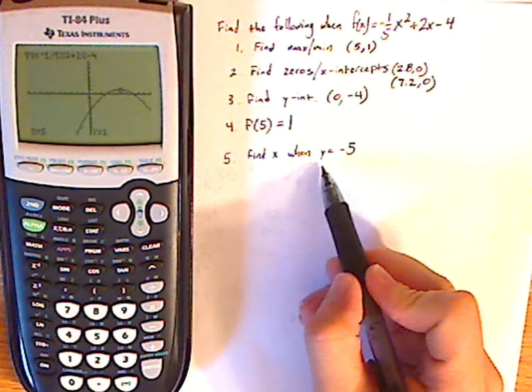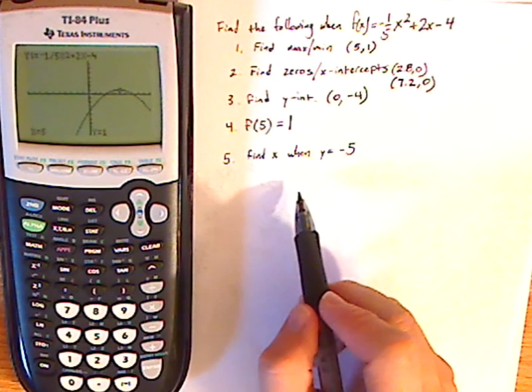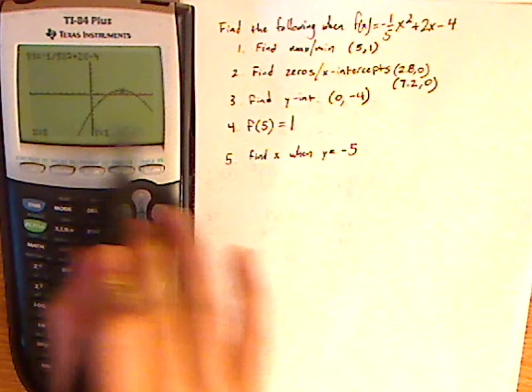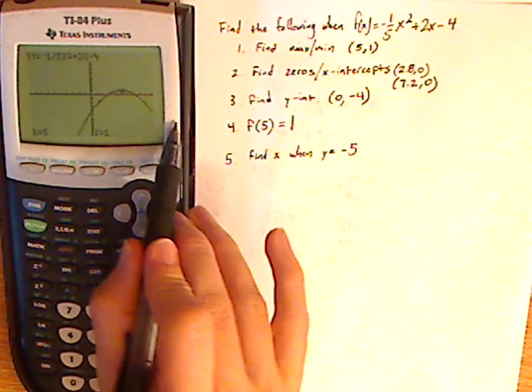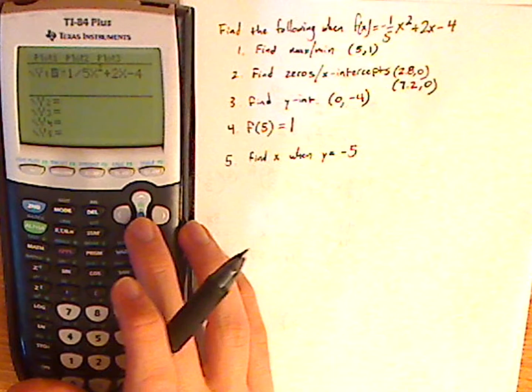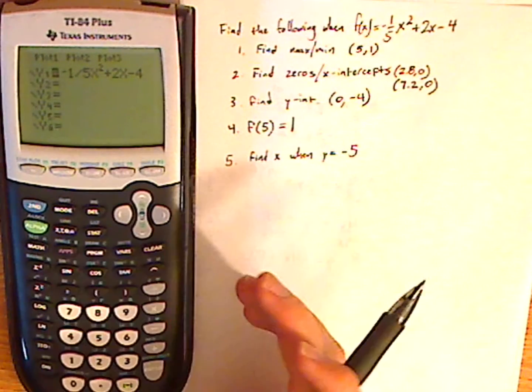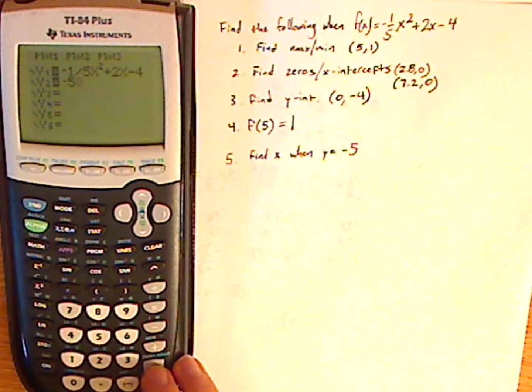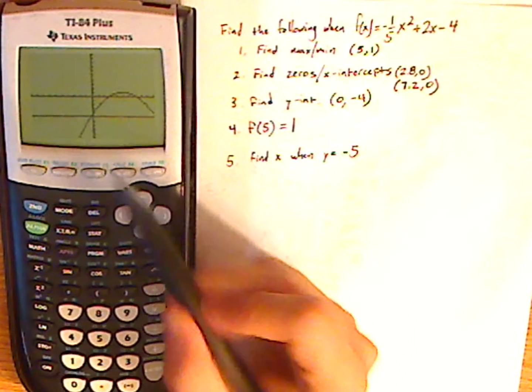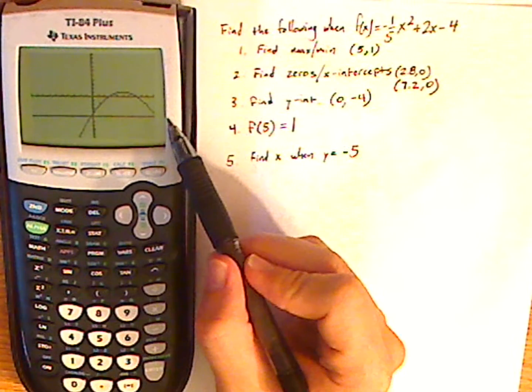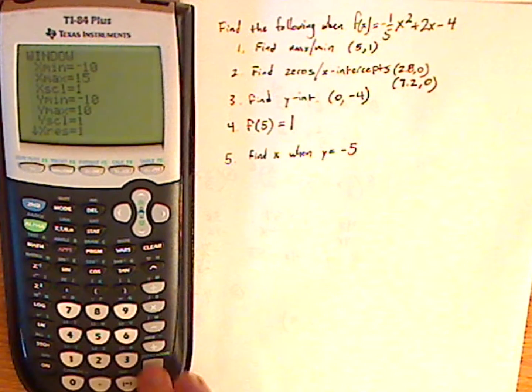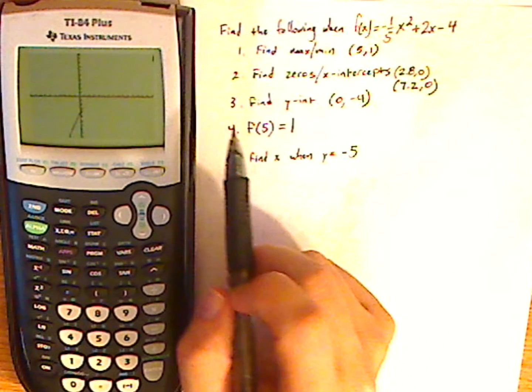All right, now to find this, find x when y equals negative 5. And for this, I might have multiple answers. And it looks like I'm going to. One over here on the left, the other one on the right. So to do this, go to the y equals screen again. And y2 make that negative 5. Graph. See, there's going to be an intersection here and then intersection over here. So I'm going to mess around with my window and move it over slightly. Just expand it.